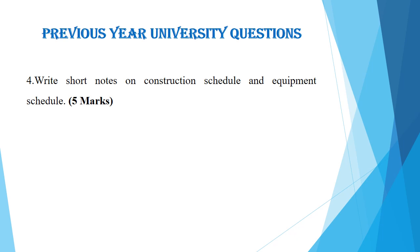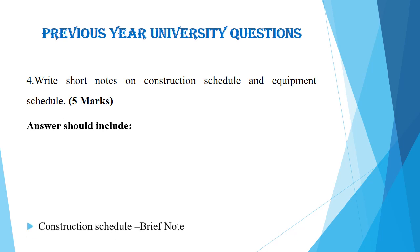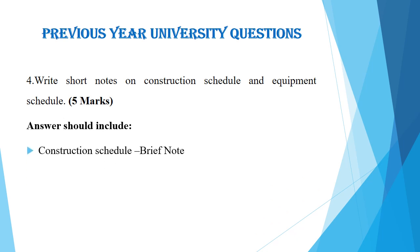The fourth question is: write short notes on construction schedule and equipment schedule, asked for five marks only. Construction schedule carries 2.5 marks and equipment schedule carries 2.5 marks. We know that different types of schedules are employed in construction project management — construction schedule, equipment schedule, labor schedule, material schedule, etc. Your answer should include a brief note on construction schedule and a brief note on equipment schedule: what each is, its importance, and why it matters in civil engineering project management.